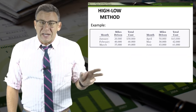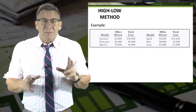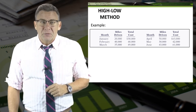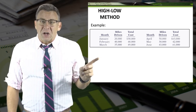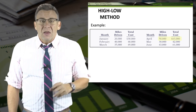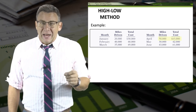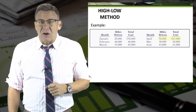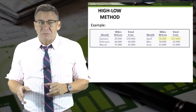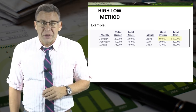Here is a sample data set — the same data shown in the scatter plot. Notice the volume and the cost for six months. The high level of volume is April at 50,000 miles. We also need the cost for this month, which is $63,000.